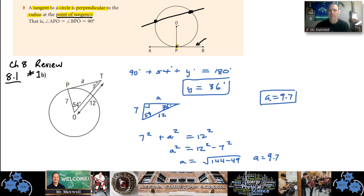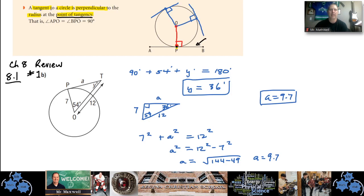If you draw a radius — a line from the center of the circle to the edge — and that radius ends at the point of tangency, you always know that angle is 90 degrees. That's very important. No matter where that tangent line is, the line from the point of tangency to the center makes a perfect 90-degree angle. So a tangent to a circle is perpendicular to the radius — perpendicular means it makes a 90-degree angle.